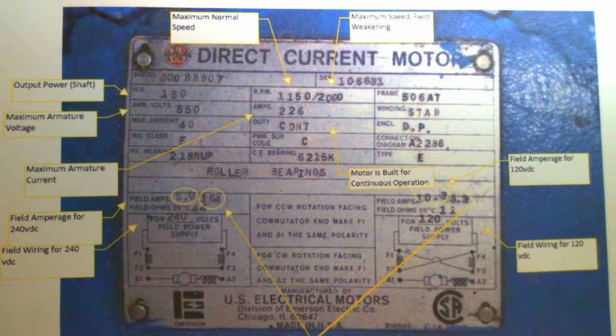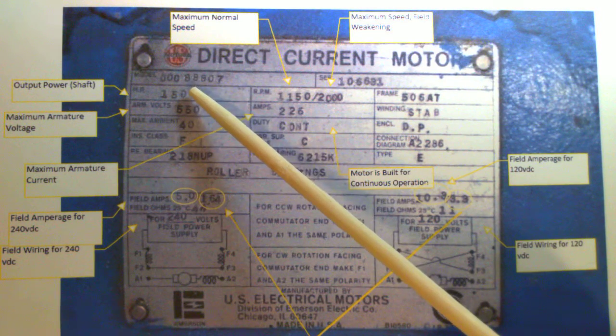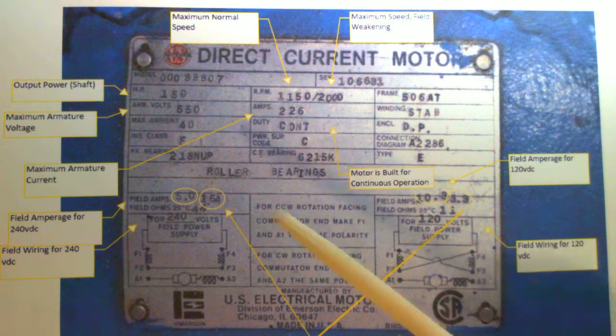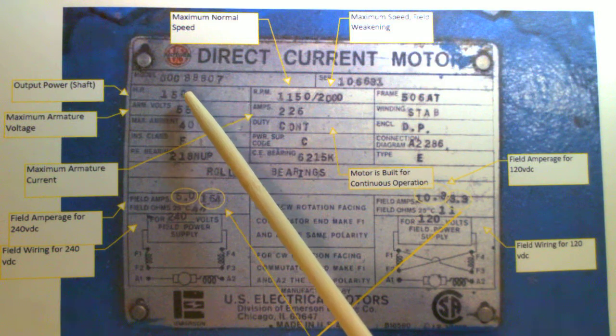Usually the first thing we look at when we look at the nameplate for a motor is this thing right here. Horsepower. What you need to commit to memory is when you see horsepower on a motor nameplate, that is the output horsepower or the horsepower that the shaft can put out. I do believe that sometimes it's called brake horsepower. So in the case of our motor, this motor is capable of delivering 150 horsepower to its mechanical load.